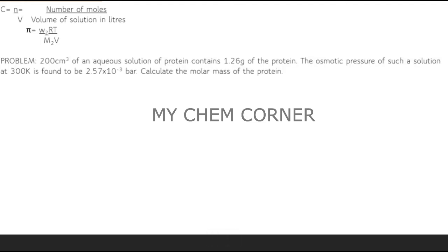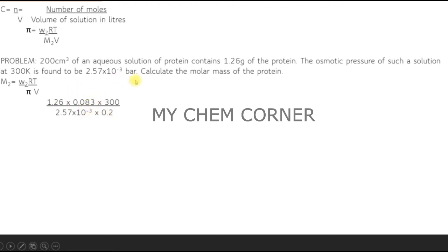Here is a problem: 200 cm³ of aqueous solution of protein contains 1.26 grams of protein. The osmotic pressure at 300 kelvin is 2.57 × 10⁻³ bar. Calculate the molar mass of the protein. Given values: W2 = 1.26 g, T = 300 K, pi = 2.57 × 10⁻³ bar, V = 200 cm³ = 0.2 liters, R = 0.083 bar·L/(mol·K) since pressure is in bar. Substituting these values gives the molar mass as 61,038 grams per mole.